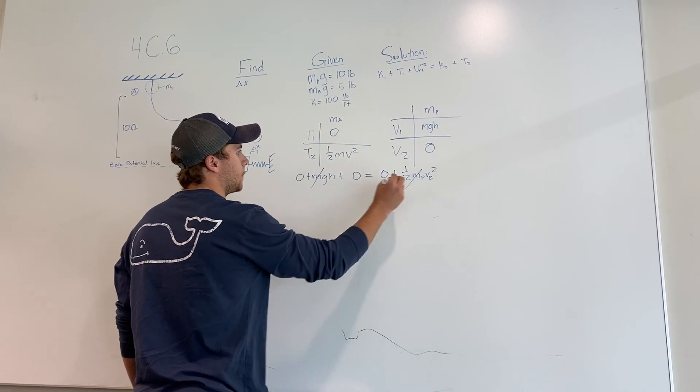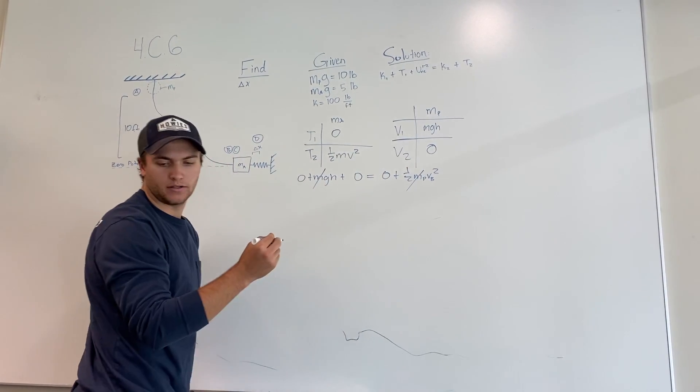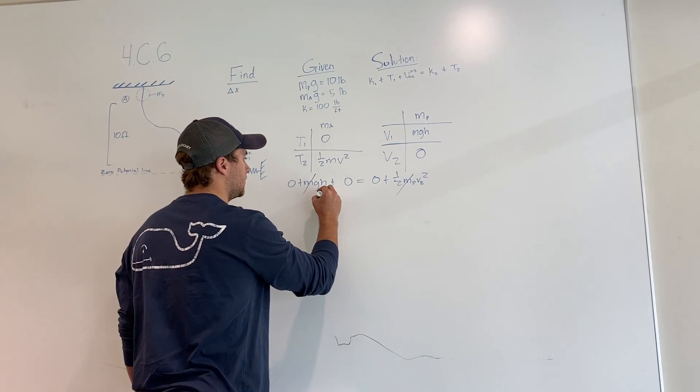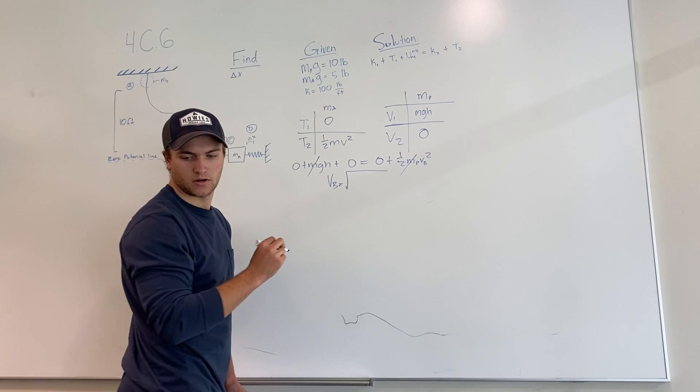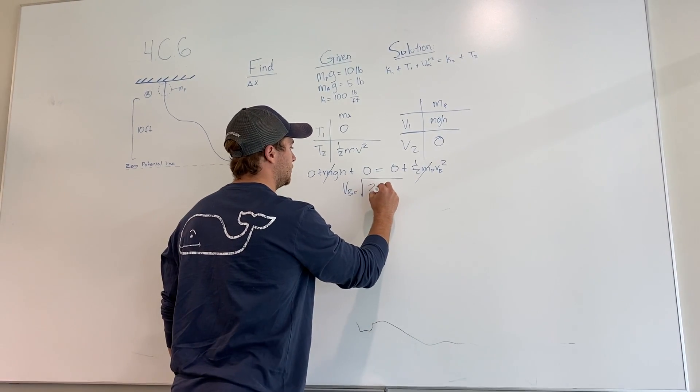So then you can see the masses cancel out. And then if you solve this symbolically, you solve for V. V equals square root of 2 G H.